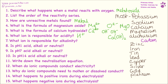Which ion is responsible for acidity? That is our hydrogen ion. Which ion is responsible for alkalinity? That is our hydroxide ion. pH 1 is acidic, pH 7 is neutral, pH 14 is alkali. The neutralization equation — they love asking questions about this — our acid ion plus our alkali ion turns into water, so acid plus alkali makes neutral.